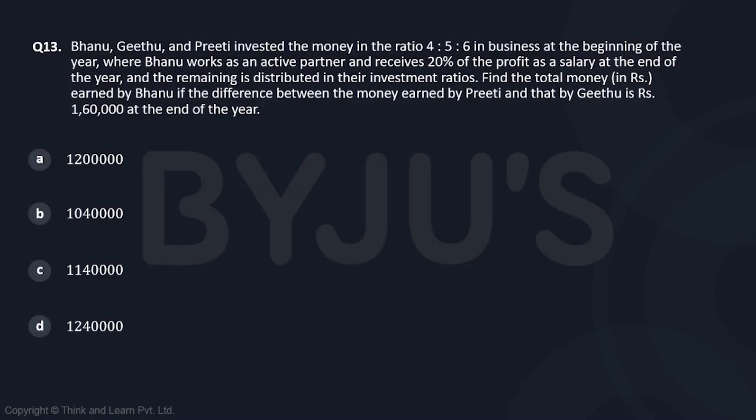Next question, again a bit lengthy to read but this is not actually a difficult question. So you have B, G and P in the ratio 4, 5 and 6.